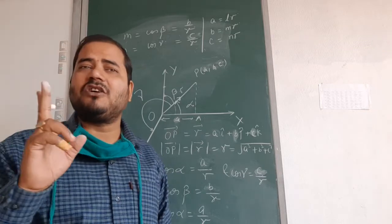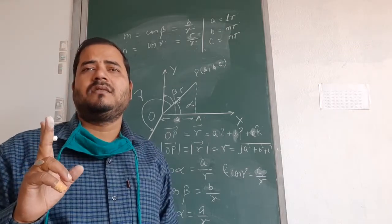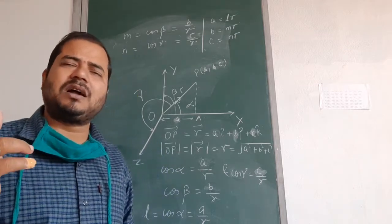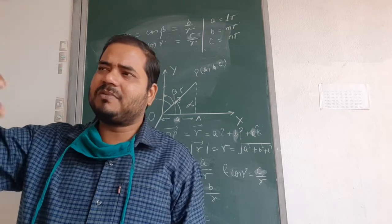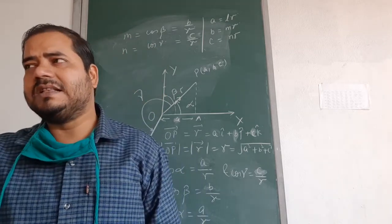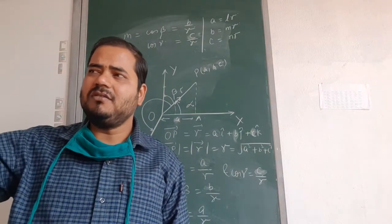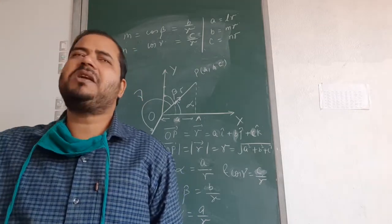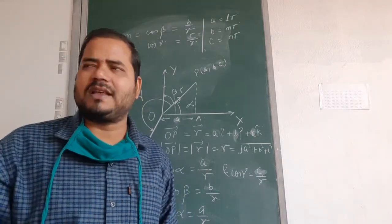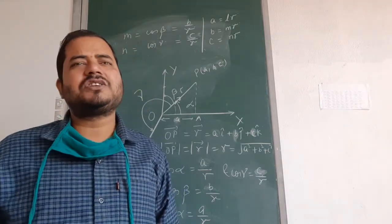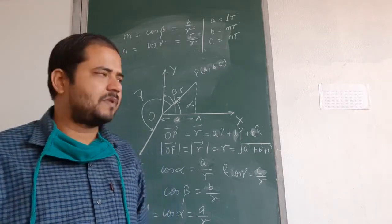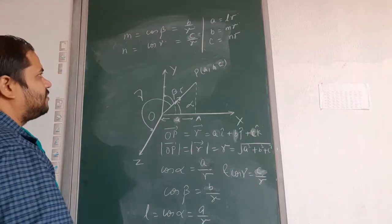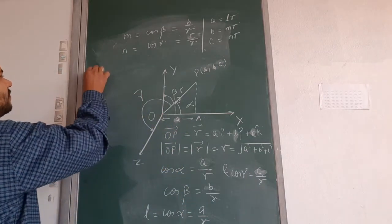We keep repeating this because you must remember the concept. Direction cosines are simply cos α, cos β, cos γ, where α, β, γ are the direction angles. Direction ratios are L, M, N multiplied by the same scalar quantity. Please note it down.